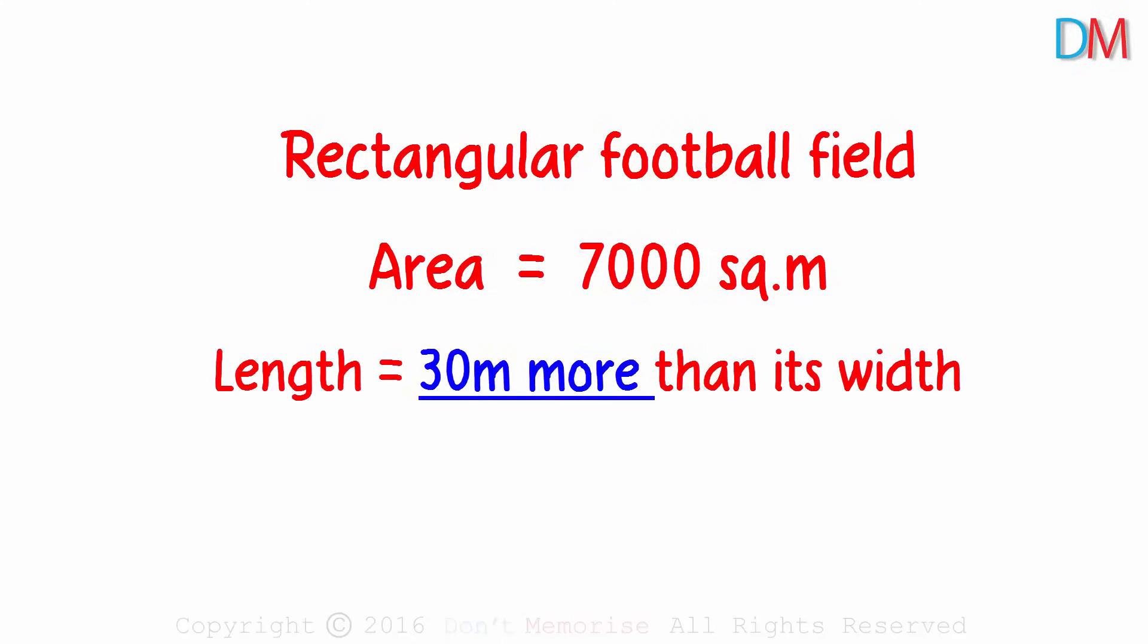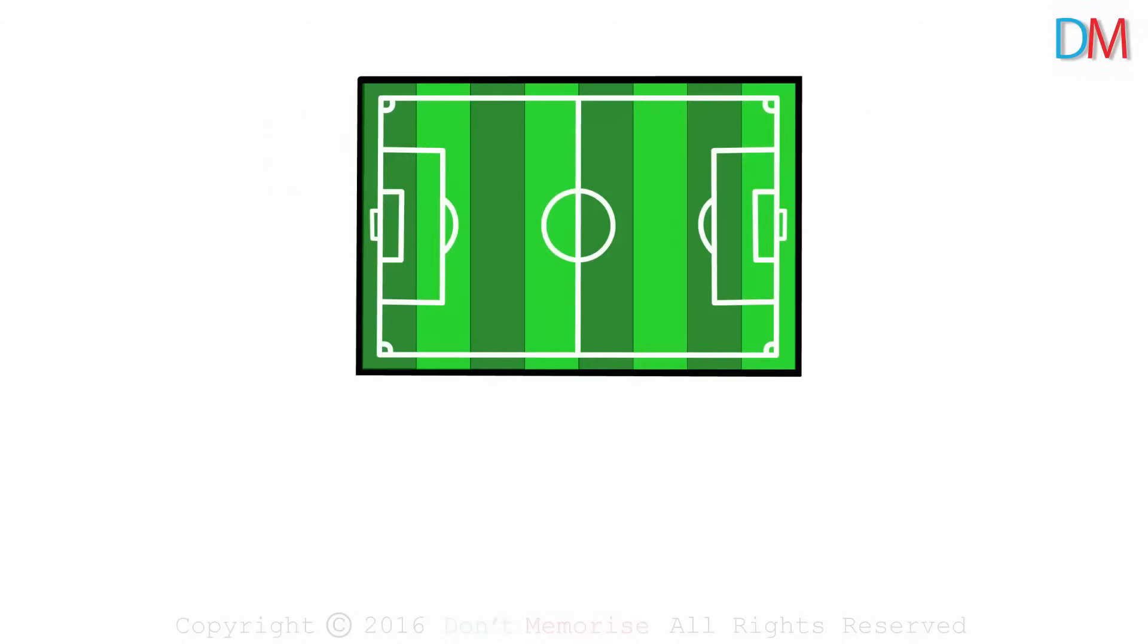Say you are asked to build a rectangular football field with an area equal to 7000 square meters, and you are also told that the length of the field should be 30 meters more than its width. How would you build the field? Say this is the rectangular field. Its area is 7000 square meters.